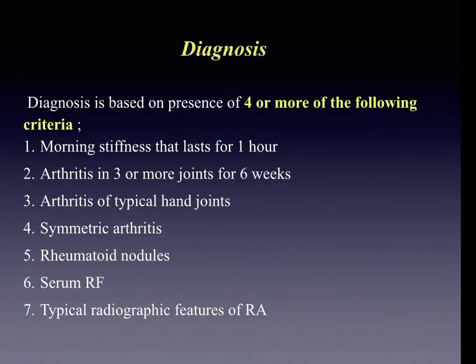Diagnosis of rheumatoid arthritis is based on the presence of four or more of seven criteria: morning stiffness lasting one hour; arthritis in three or more joints lasting six weeks; arthritis of typical hand joints; symmetric joint involvement; presence of rheumatoid nodules; presence of serum rheumatoid factor; and typical radiographic features. The diagnosis is confirmed when four or more criteria are present.